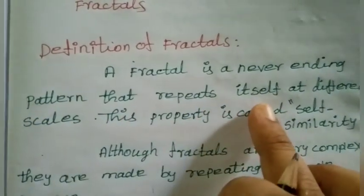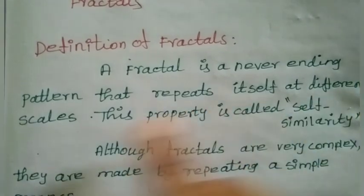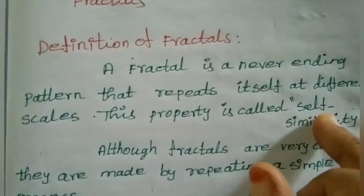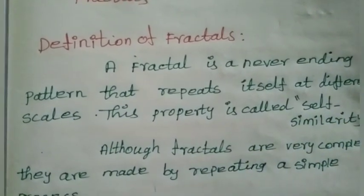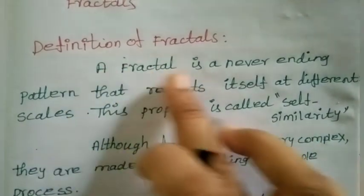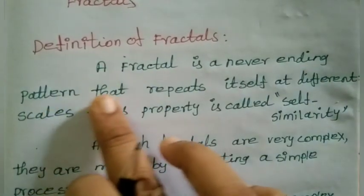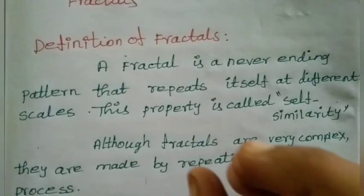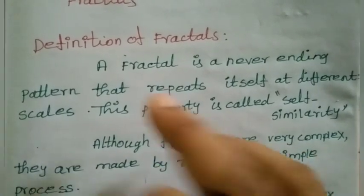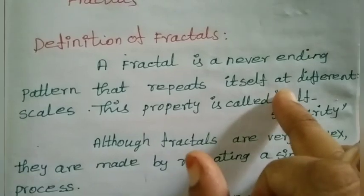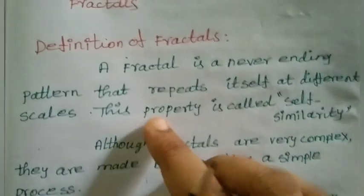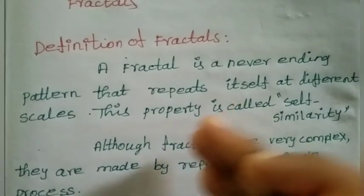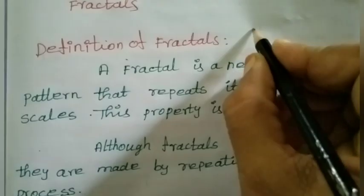A fractal is a never ending pattern that repeats itself at different scales. This property is called self-similarity. If we take an example — if we take a triangle, it is repeated at different scales.